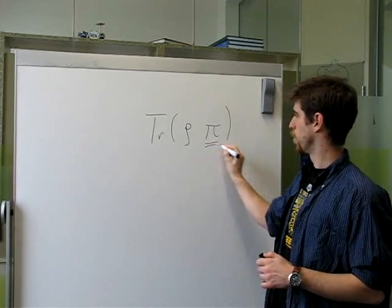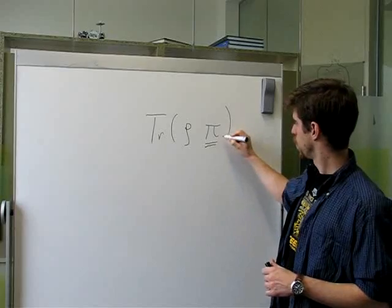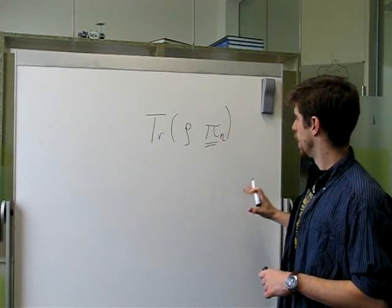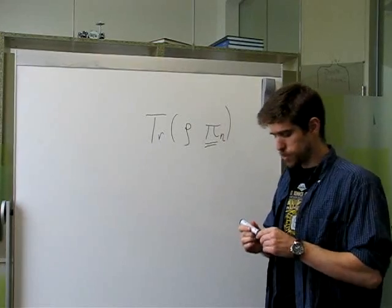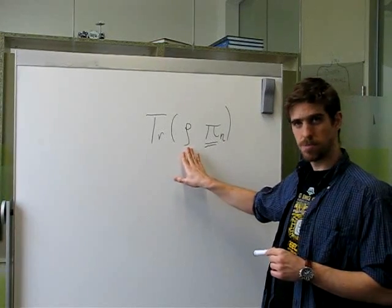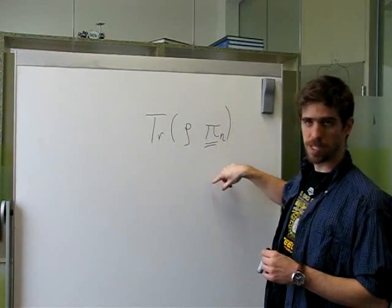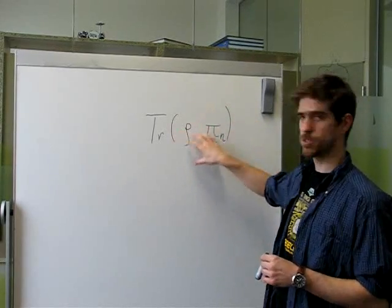This is the operator that describes our detector with some outcome, say labeled N. For state tomography, we send this same state and measure in different bases, changing N, to try to reconstruct this.